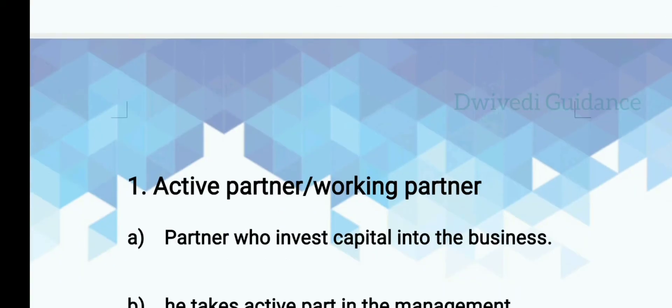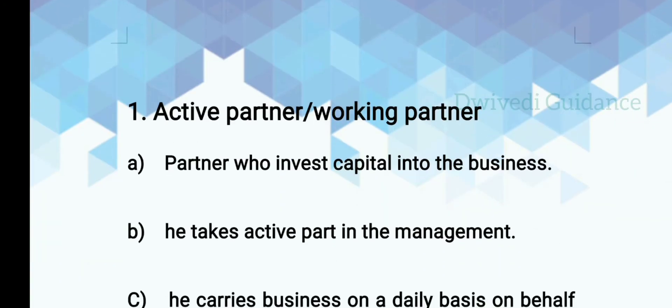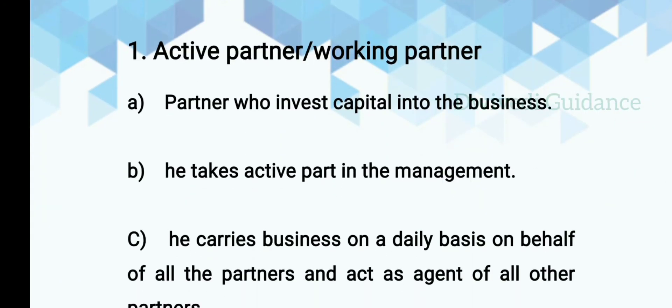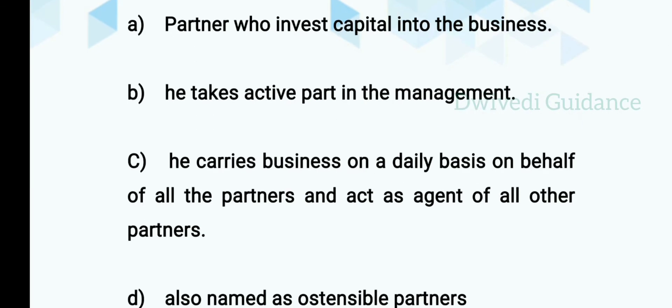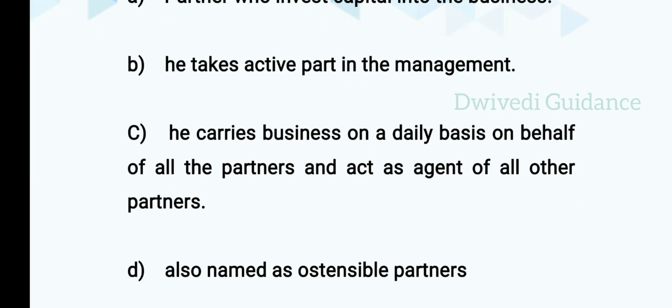First is active partner or working partner. As the name suggests, this partner is very actively participating in the business. Partners who invest capital into the business take an active part in the management. He carries on business on a daily basis on behalf of all the partners and acts as an agent of all other partners.